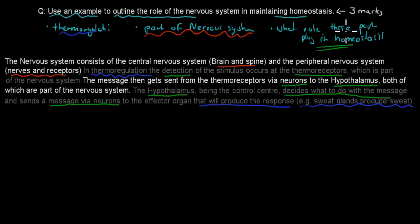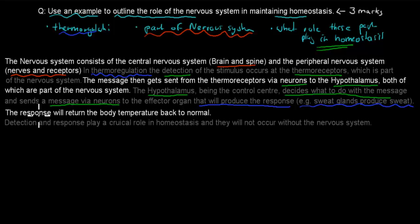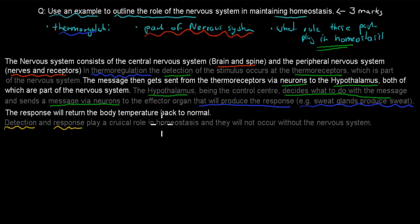So now I've given the outline of what role the nervous system plays in homeostasis — it plays a big role in detection and response. My last statement sums this up: the response will return the body temperature back to normal. Detection and response plays a crucial role in homeostasis, and they will not occur without the nervous system. Homeostasis does not occur without detection and response.